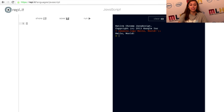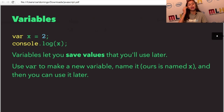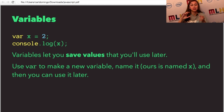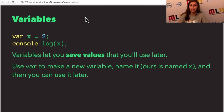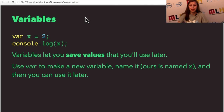Basically, everything in JavaScript is a statement, and what statements do is they execute some kind of command to the browser. I'm going to teach you how to construct different statements and put together really large programs with JavaScript. I showed you console.log, and that just prints something to the console. Now I'm going to talk to you about variables. Variables let you save values that you'll use for later.